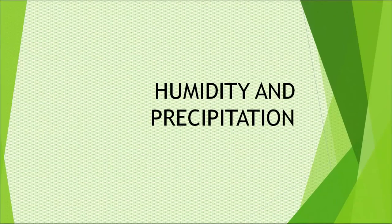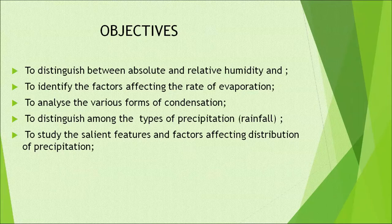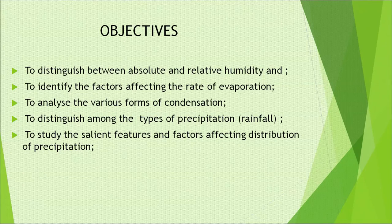Hello learners, welcome to NIOS. Today we will discuss the topic humidity and precipitation. Our objectives are to distinguish between absolute and relative humidity, to identify the factors affecting the rate of evaporation, to analyze the various forms of condensation, to distinguish among the types of precipitation, that is rainfall, and to study the salient features and factors affecting distribution of precipitation.